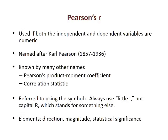Pearson's R is used when both the independent and dependent variables are numeric. The statistic is named after famous English statistician Carl Pearson, and is known by many other names, including Pearson's product moment coefficient and the correlation statistic. It is referred to using the symbol little r. Always use little r, not capital R, which stands for something else.